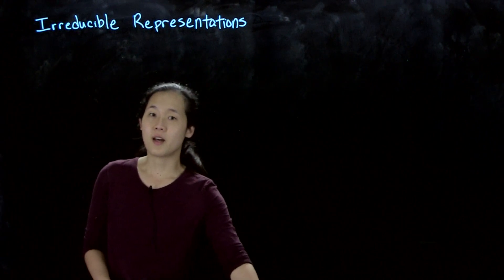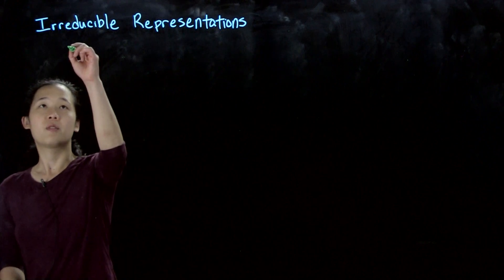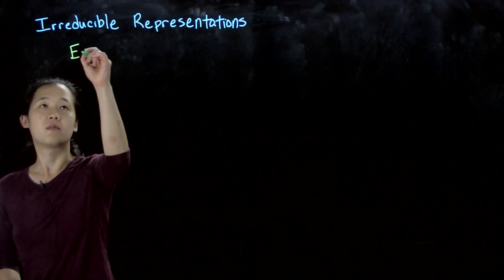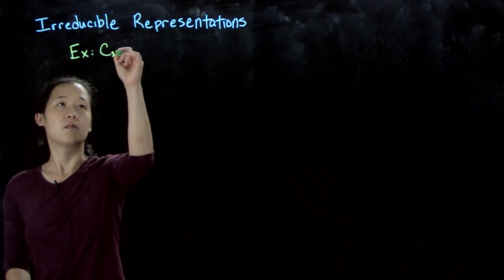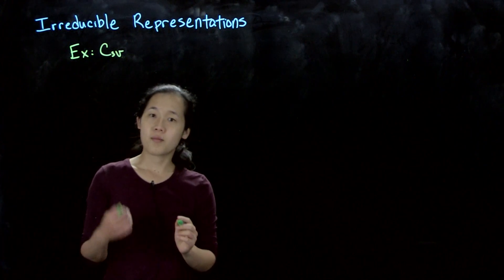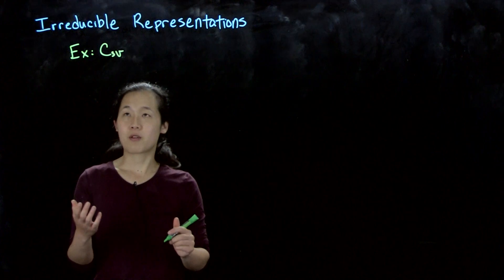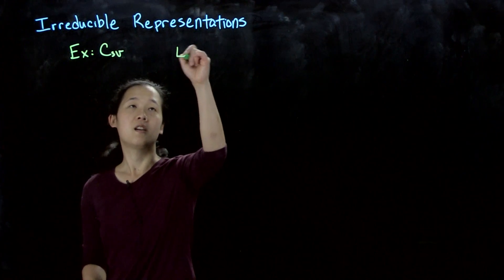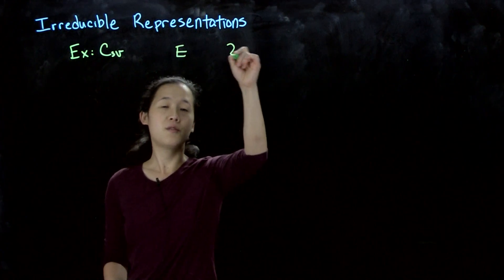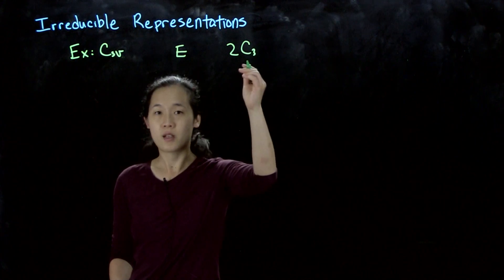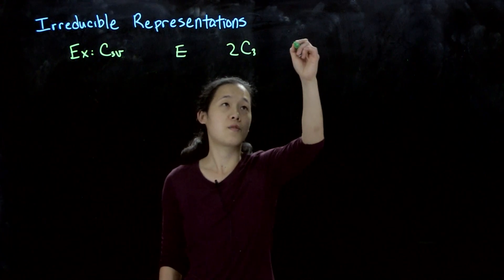Last time we were talking about the C3V point group, and we made the matrices for the different classes of symmetry operations, which we know to be E, two C3s (C3 and C3 twice), and then we had three sigma Vs.